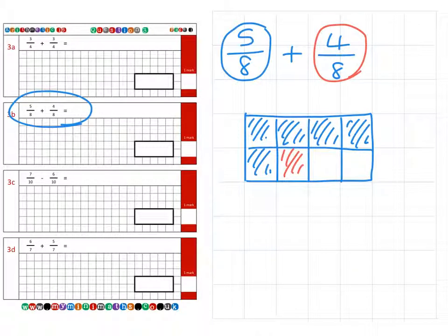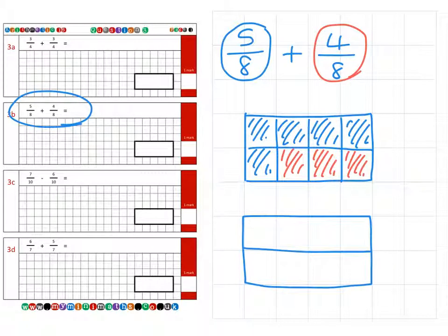And then I'm looking to add an extra 4 eighths. So there's one of those eighths, second eighth, third eighth. And then we have an extra one left over. So if we draw another box out of 8, that final one will go here.